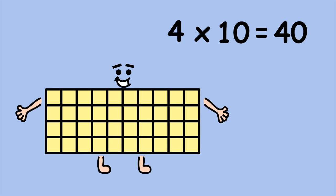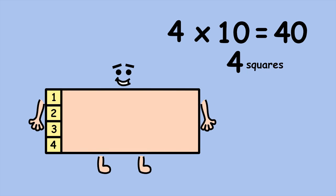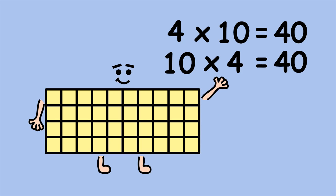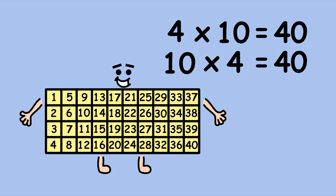There are 4 squares in a column. Now, how many columns are there? 10. 10 groups of 4, or 10 times 4 equals 40. Either way, you get the same answer.